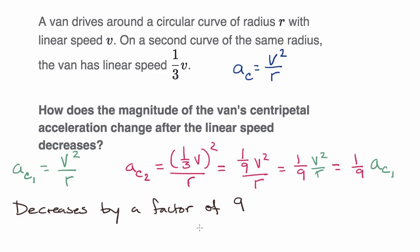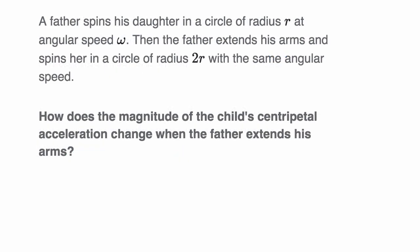Let's do another example. Here we're told a father spins his daughter in a circle of radius r at angular speed omega. Then the father extends his arms and spins her in a circle of radius 2r with the same angular speed. How does the magnitude of the child's centripetal acceleration change when the father extends his arms? Pause this video and see if you can figure it out.